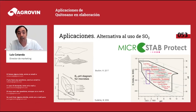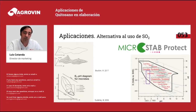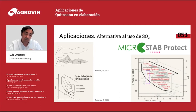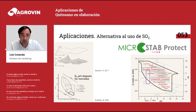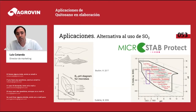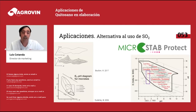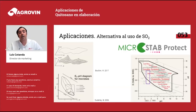Acetic bacteria need oxygen and a high redox potential to be able to develop. We know from studies and tests that chitosan is not effective against acetic bacteria. With MicroStab Protect, due to its glutathione content, we have achieved a reduction in the redox potential of the wine, and therefore we have put barriers to the development of lactic bacteria.